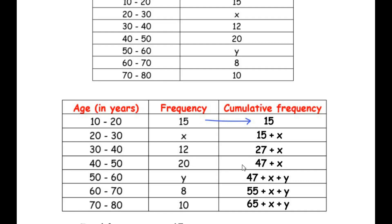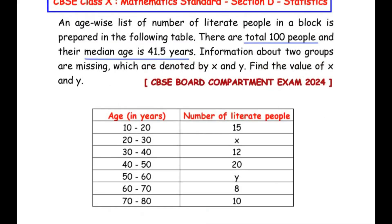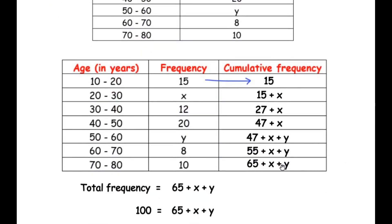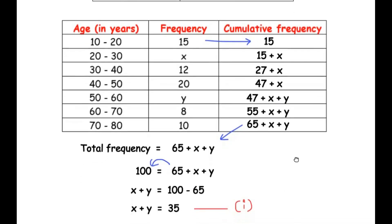Next, 47 plus x adds up with y giving 47 plus x plus y. Then adding 8 gives 55 plus x plus y. And finally adding 10 gives 65 plus x plus y. Now we make use of the total frequency given in the question, which is 100. The total frequency equals the last value of the cumulative frequency column, so 100 equals 65 plus x plus y. Taking 65 to the left-hand side: 100 minus 65 gives x plus y equals 35.